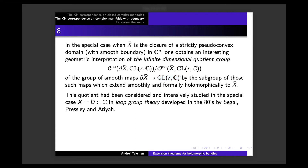This quotient had been considered and intensively studied in the special case when X-bar is just the closure of the disk in C. These are classical quotients considered in so-called loop group theory — a theory developed in the 1980s by Segal, Pressley, and Totaro — and this quotient appeared in that theory.